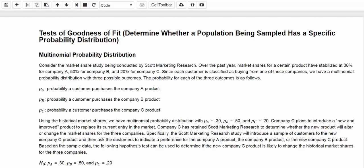In this video, we are going to talk about another application of chi-square test. Here, we are going to test the goodness of fit, which means determining whether a population being sampled has a specific probability distribution. In this video, we are going to discuss the multinomial probability distribution, and in the next video, we are going to do the goodness of fit test for the normal distribution.